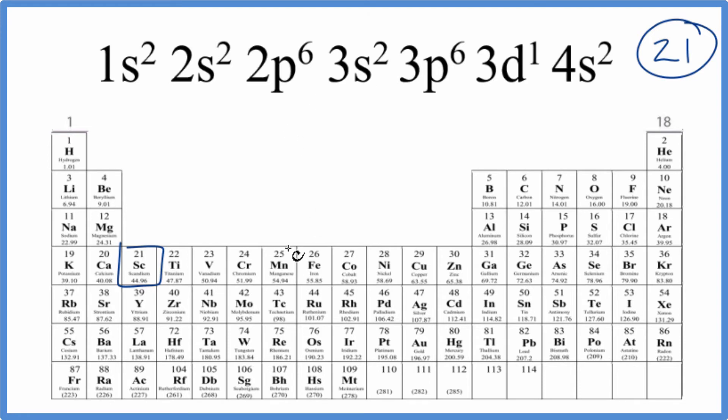So to do that, we just find the noble gas before scandium. So there's 21, we go back to 18, argon right here. So instead of having all of this, which is 18 electrons, we just write Ar.